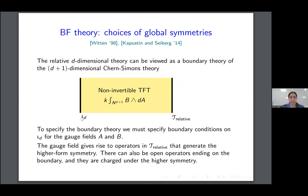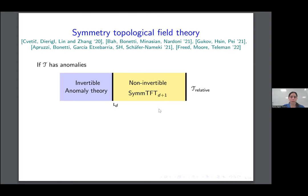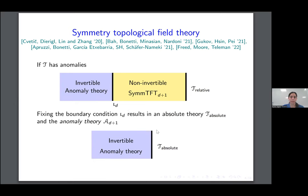Given that we can have different boundary conditions for A and B means that we can have different symmetries in this boundary theory. Now if we fix the boundary condition on the left, then we close the yellow region and we get an absolute theory on the right hand side. In general, these gauge fields B and A may have anomalies, in which case the picture modifies to one where on the left you have this invertible anomaly theory. Once you fix the boundary condition, you get this absolute theory which has this anomaly theory, where the anomalies in d+1 dimensions match the anomalies of this anomalous absolute theory.